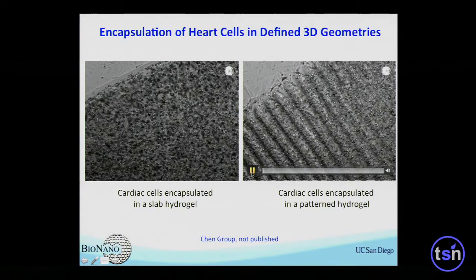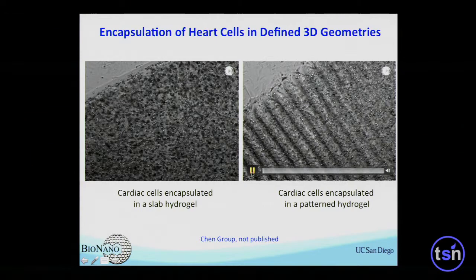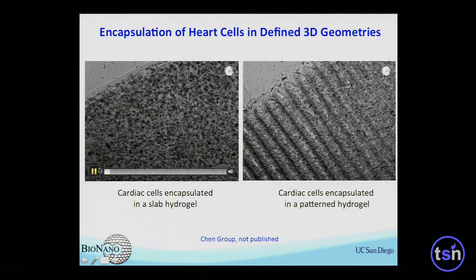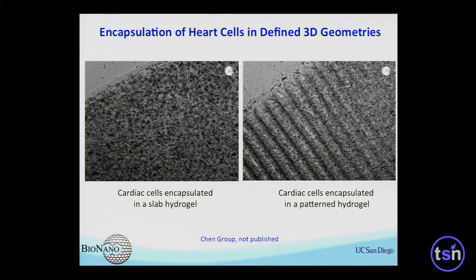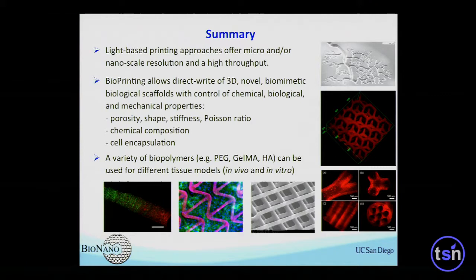We did a little engineering — instead of doing just a flat gel, I used an aligned patterned gel, like muscle alignment. You can see the frequency of beating is quite different. The unaligned case is very much random with much higher frequency, but the aligned one is more robust and organized. The alignment of this hydrogel helps these cells communicate in a better way.